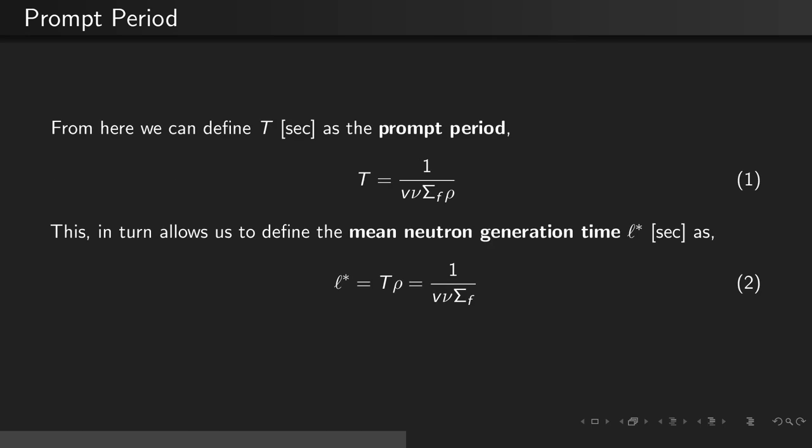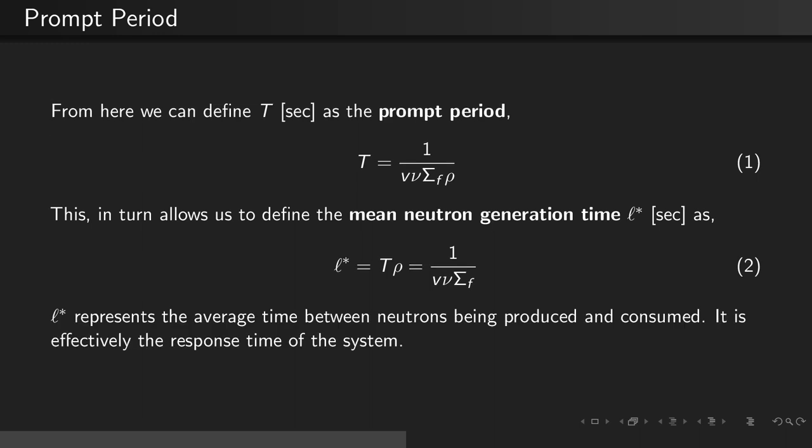This, in turn, allows us to define the mean neutron generation time, L star, as the prompt period times the reactivity, or 1 over v nu sigma f. The mean neutron generation time represents the average time between neutrons being produced and consumed. It is effectively the response time of the system.